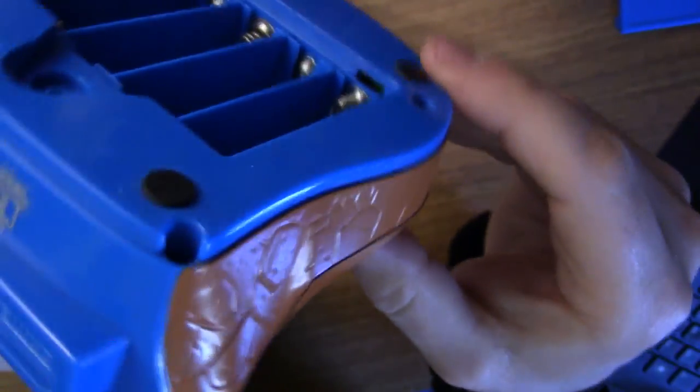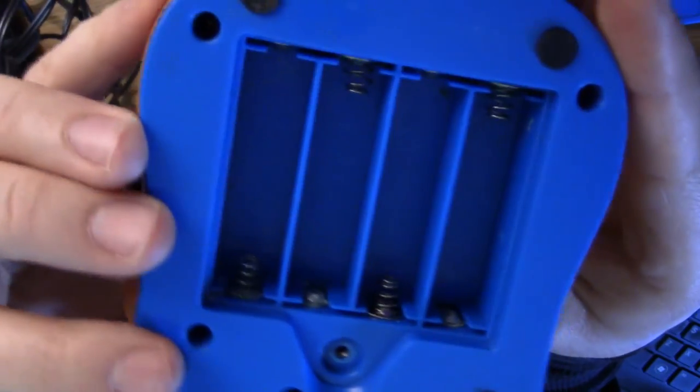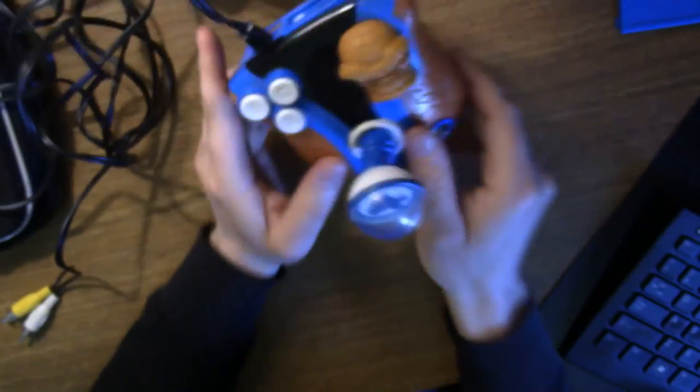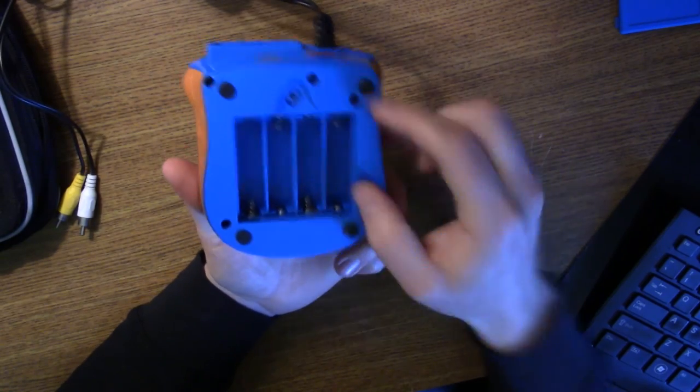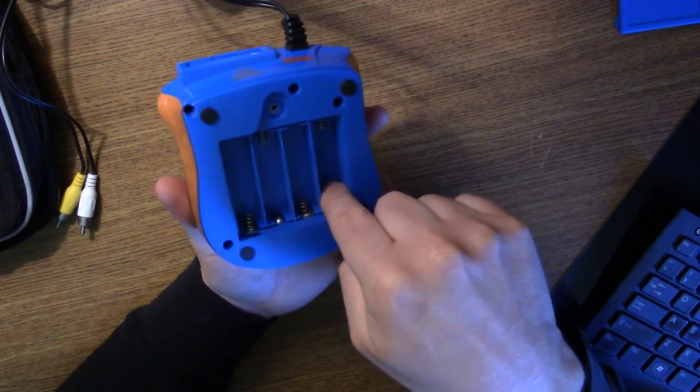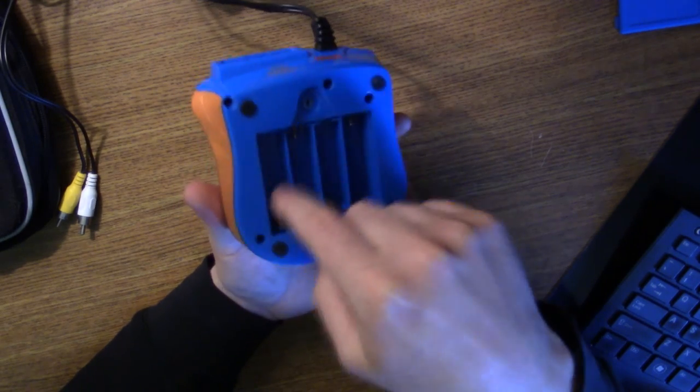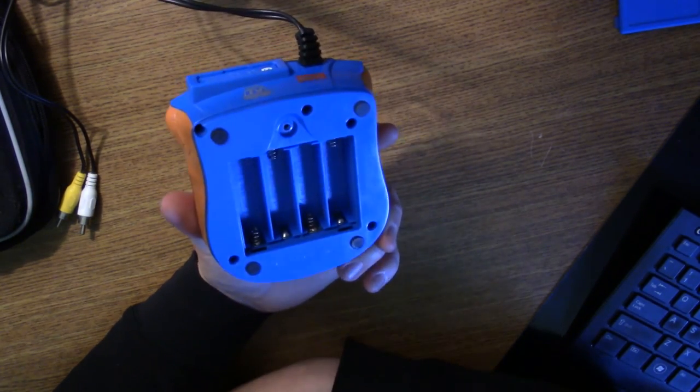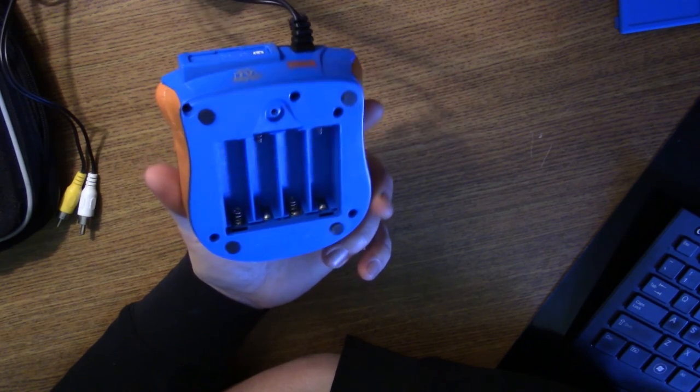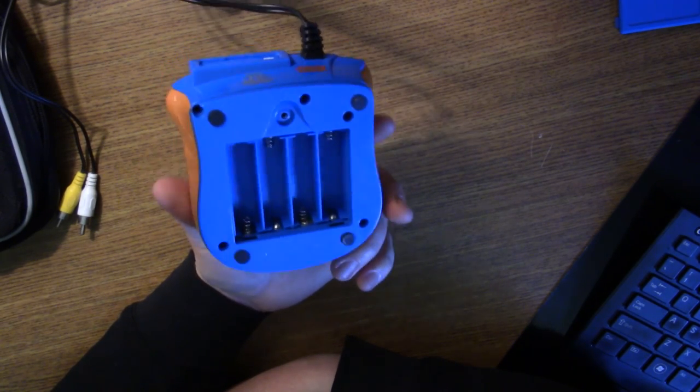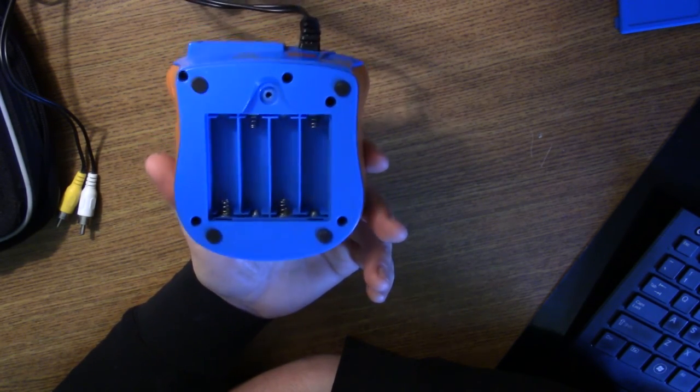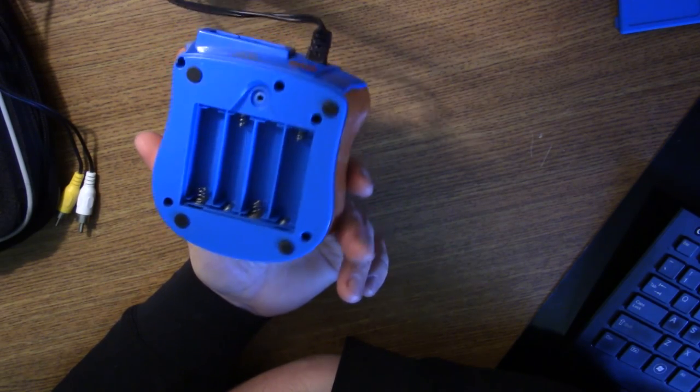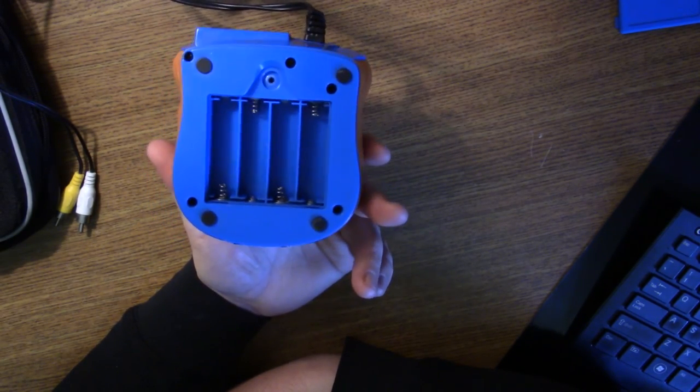That happens with electronics when you leave the batteries in there. So if you're going to put a Game Boy in storage or any device that takes batteries, remove the batteries. Or you can take them out and put a piece of paper on each terminal, put the batteries in so the paper is blocking the connection. But it's probably just a better idea to remove the batteries if you're going to store an electronics component for an extended period of time.